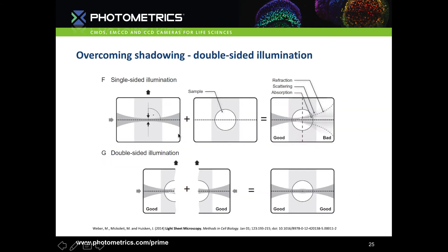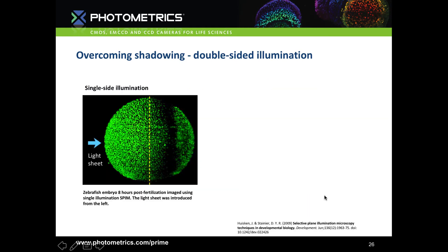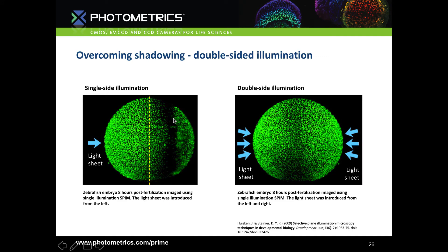Another way is to use double-sided illumination, where a lightsheet is introduced from both the left and right sides of the sample simultaneously to cover the area of poor image quality caused by light refraction, scattering, absorption and shadowing. In the single-sided image the lightsheet doesn't penetrate the entire zebrafish embryo and the other half becomes blurry and patchy, but with a lightsheet from both sides, almost even illumination of the embryo is achieved — a really big advantage of lightsheet microscopy.